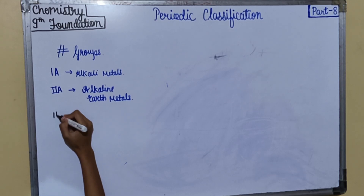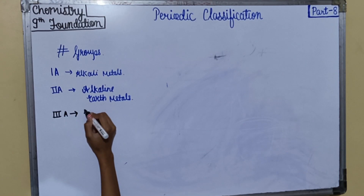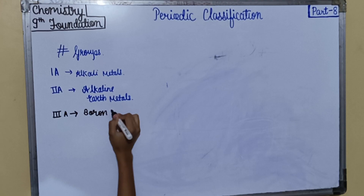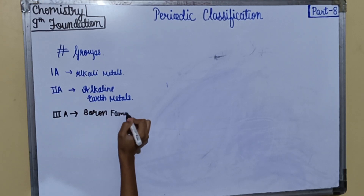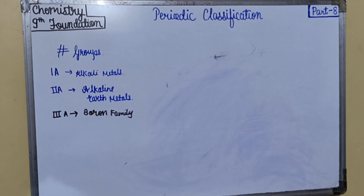Third A group is the boron family. As all elements in this group represent similar properties and boron being the first element of this group, this group is called the boron group.